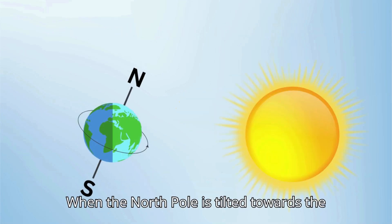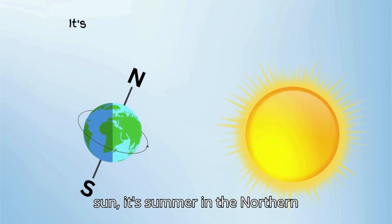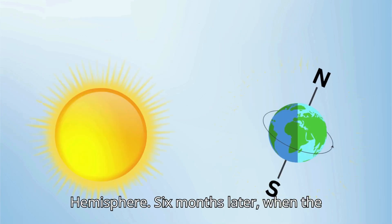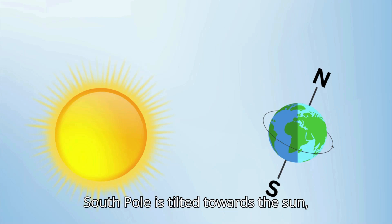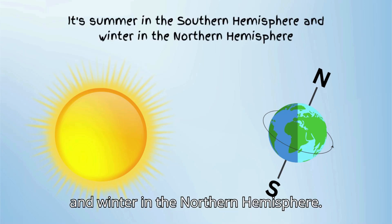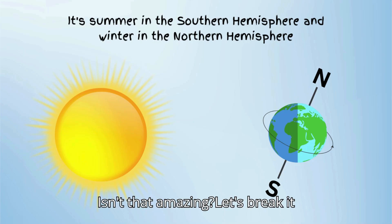When the north pole is tilted towards the sun, it's summer in the northern hemisphere and winter in the southern hemisphere. Six months later, when the south pole is tilted towards the sun, it's summer in the southern hemisphere and winter in the northern hemisphere. Isn't that amazing?